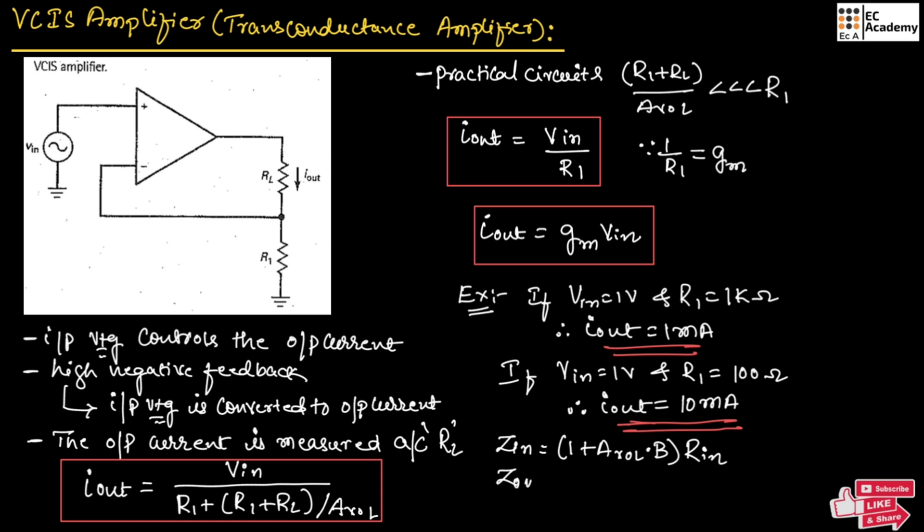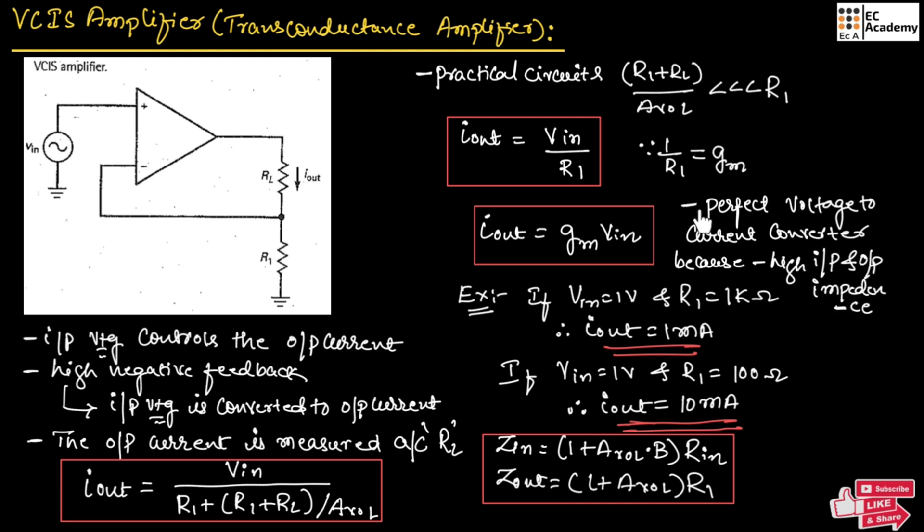The output impedance can be written as (1 plus Avol) times R1. This circuit is a perfect voltage to current converter because it has high input and output impedance.